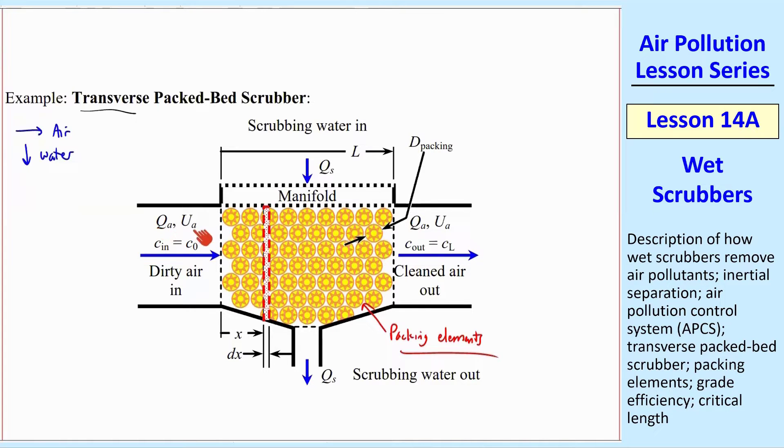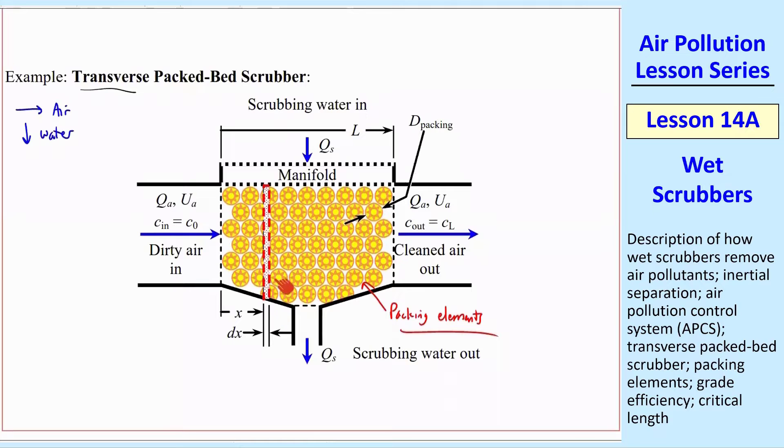We use the same notation, QA, UA for the air coming in, CN, and then QS for the water. That QS of the water just drains out. And you could do a differential analysis of this just like we did with a spray tower, except now it's a vertical slice at X with thickness DX.